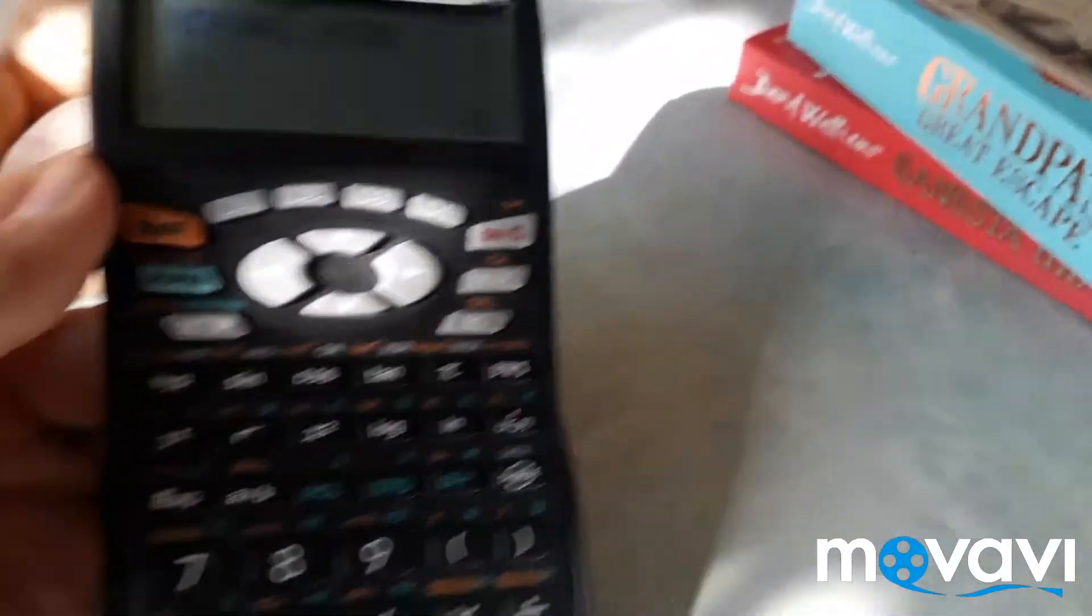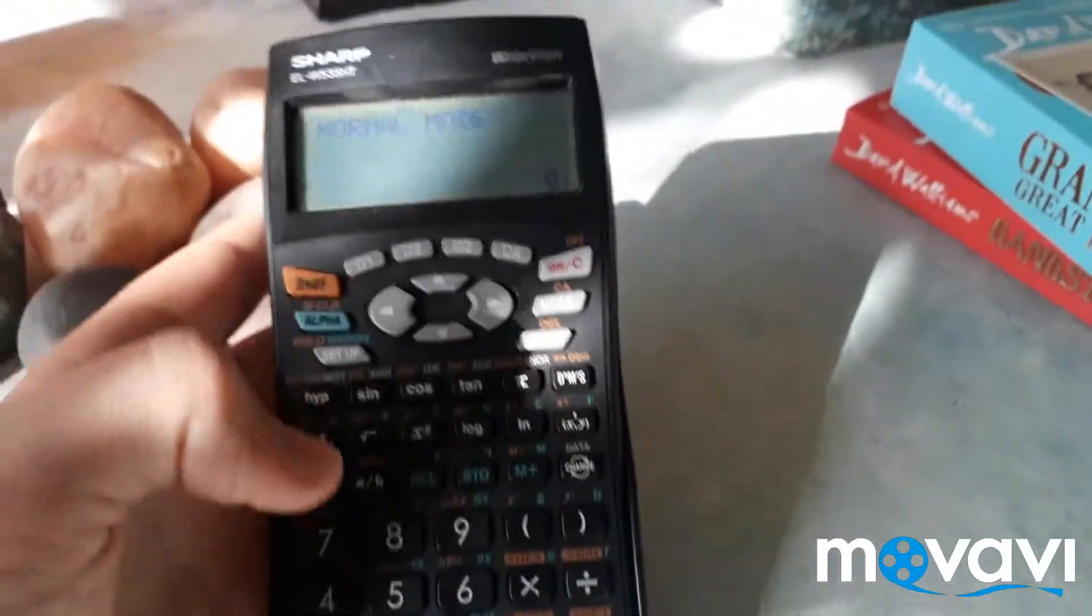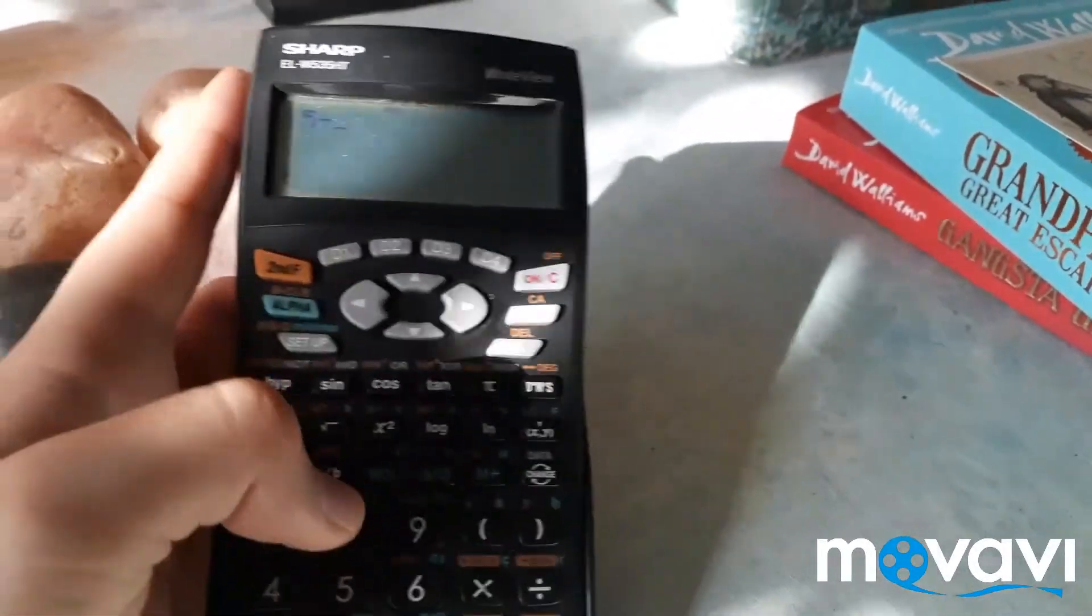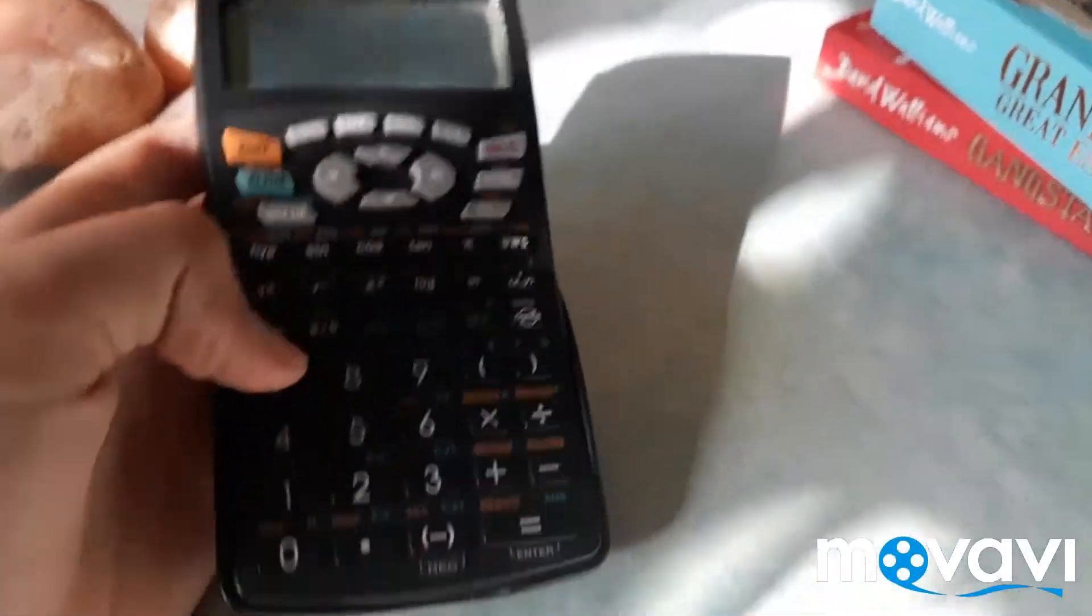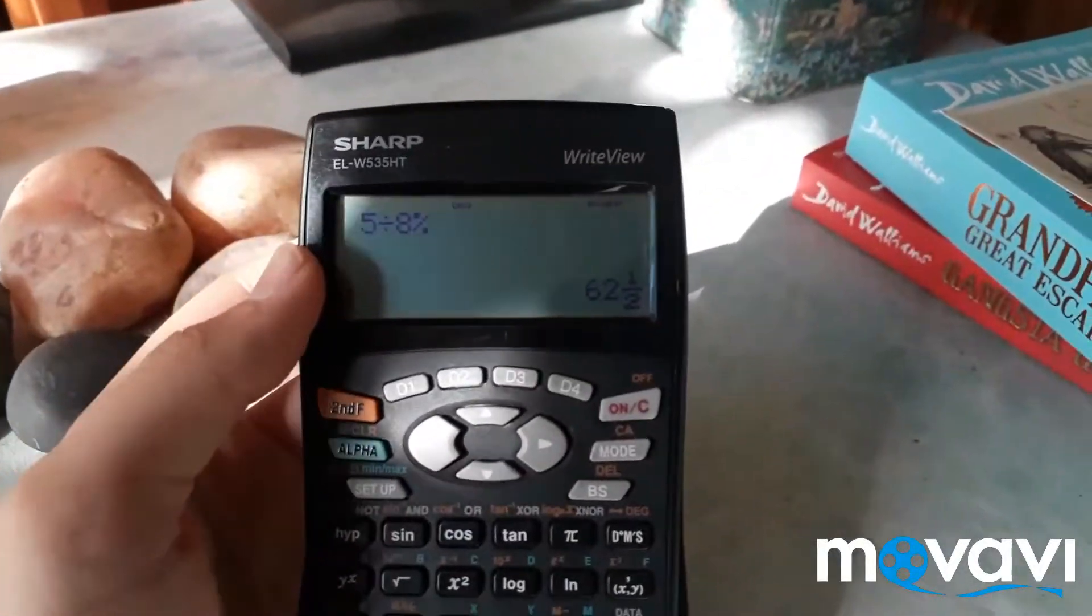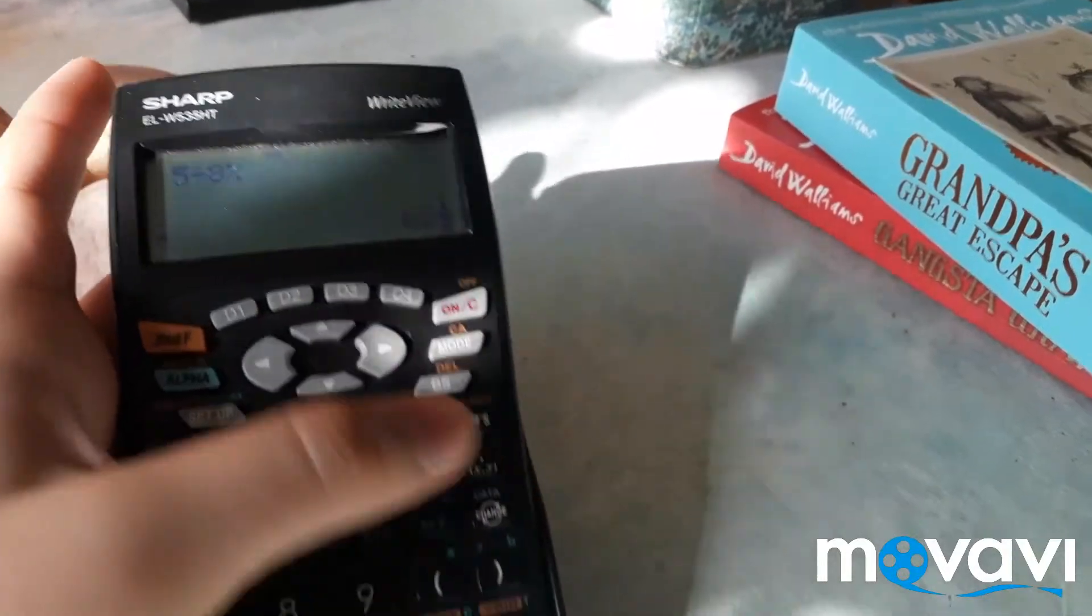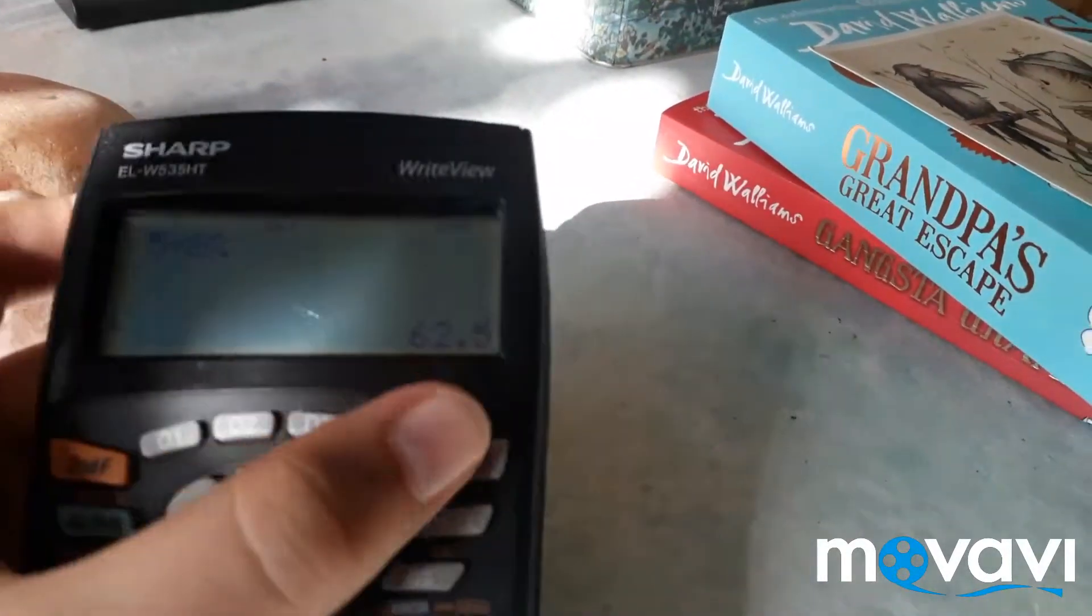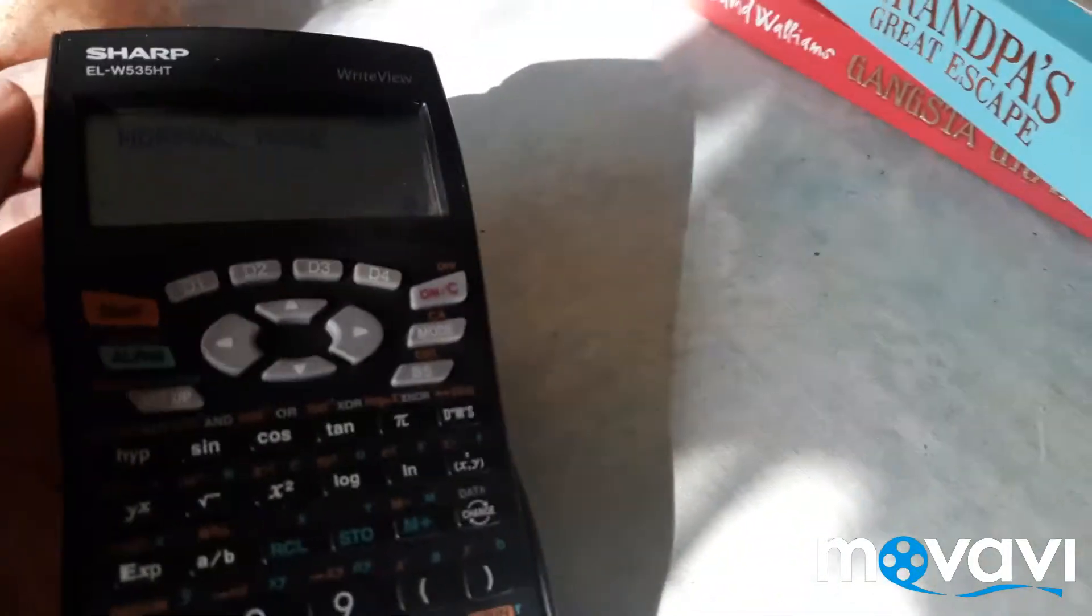Alright. And that's because we need to calculate it differently. Now to do this, you need to say, 5 divided by 8, second function, percentage. See? Now we've got this. 62.5.